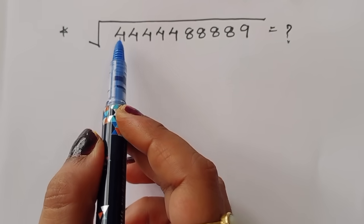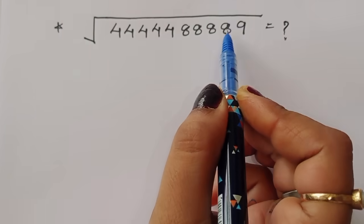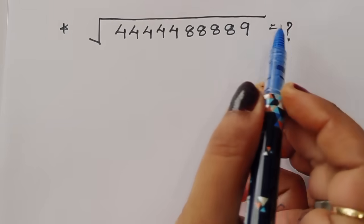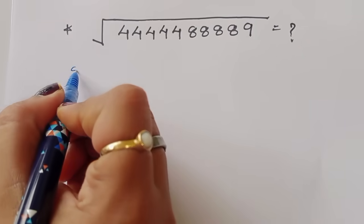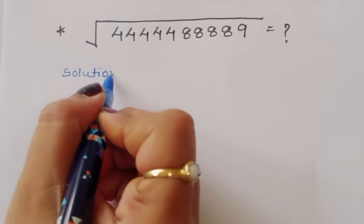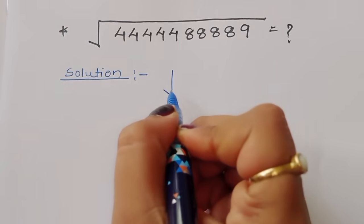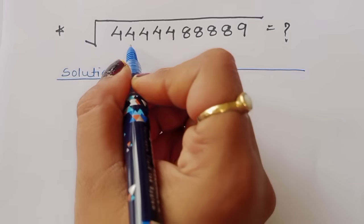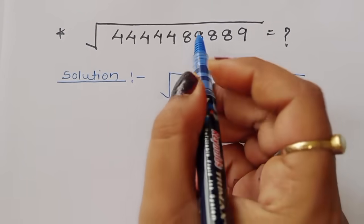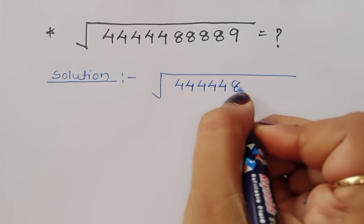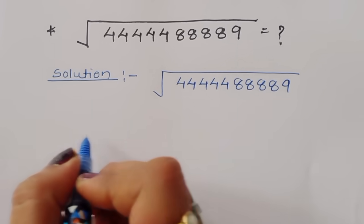The question is: given square root of 12345 times 54321 times 48889, what is the value of this expression? We have to find out the value of this term. Let's see the solution.